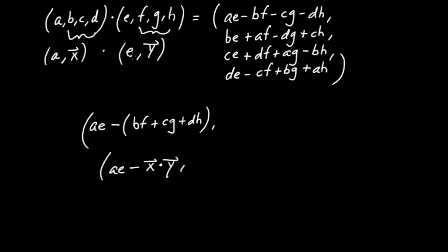What I'm going to do now is single out these three terms. Notice what they have in common: they have an E being multiplied by B, C, and D. And remember, (B, C, D) is precisely the vector x. Which means in the new vector part, I could summarize these three terms as E times the vector x.